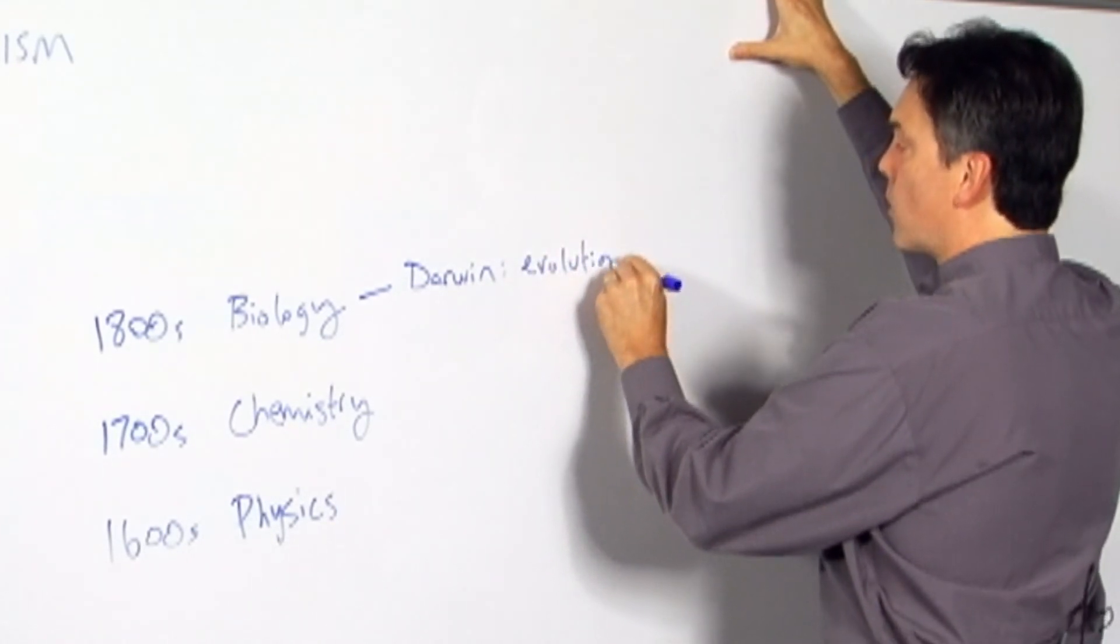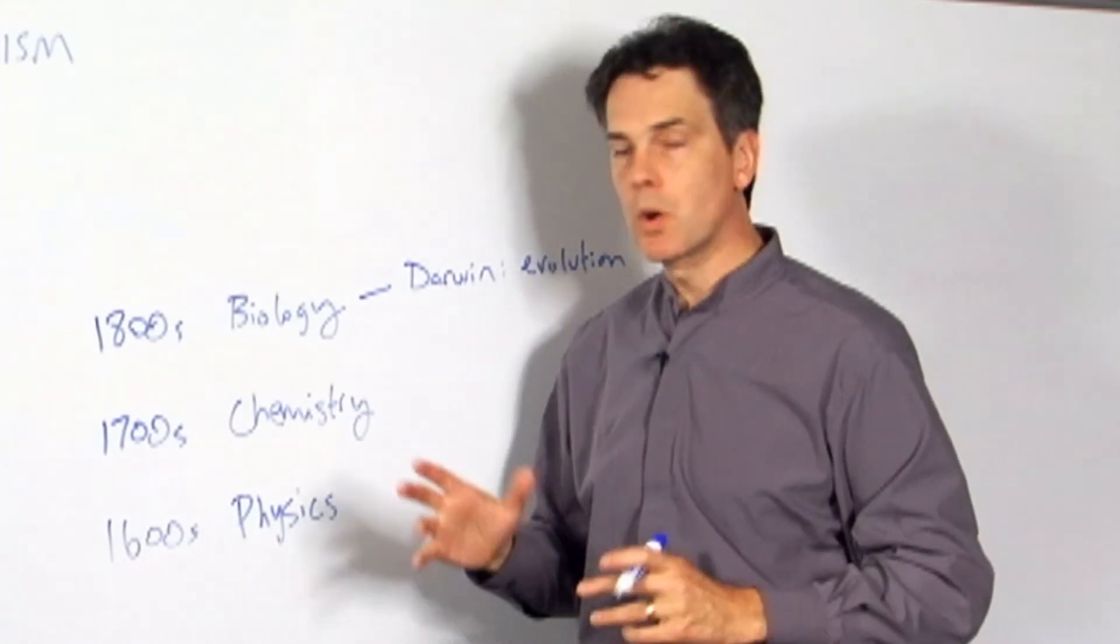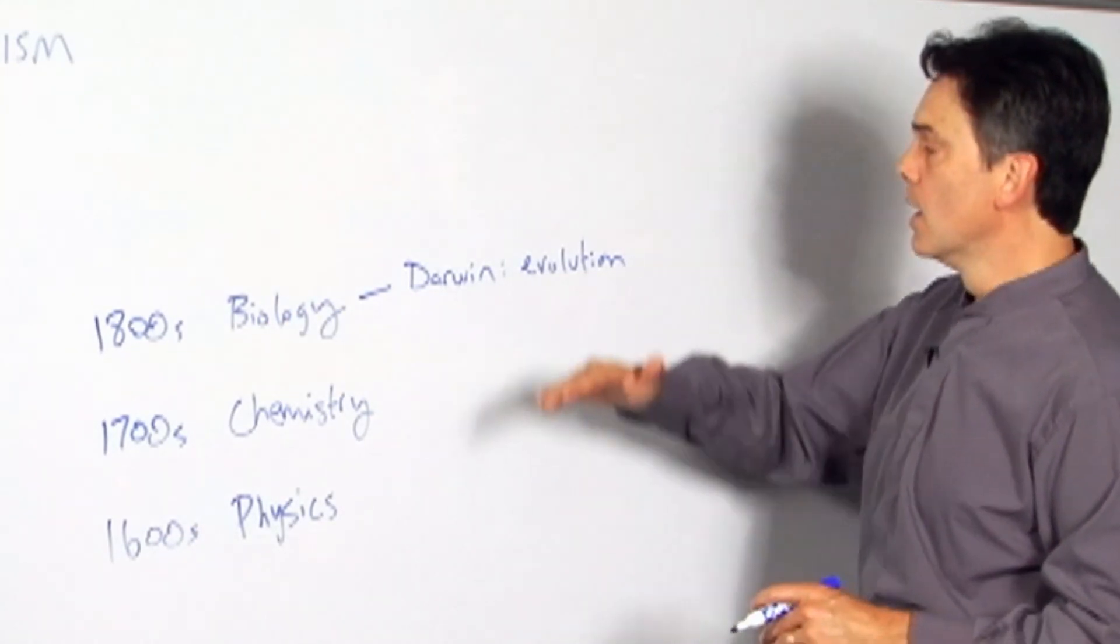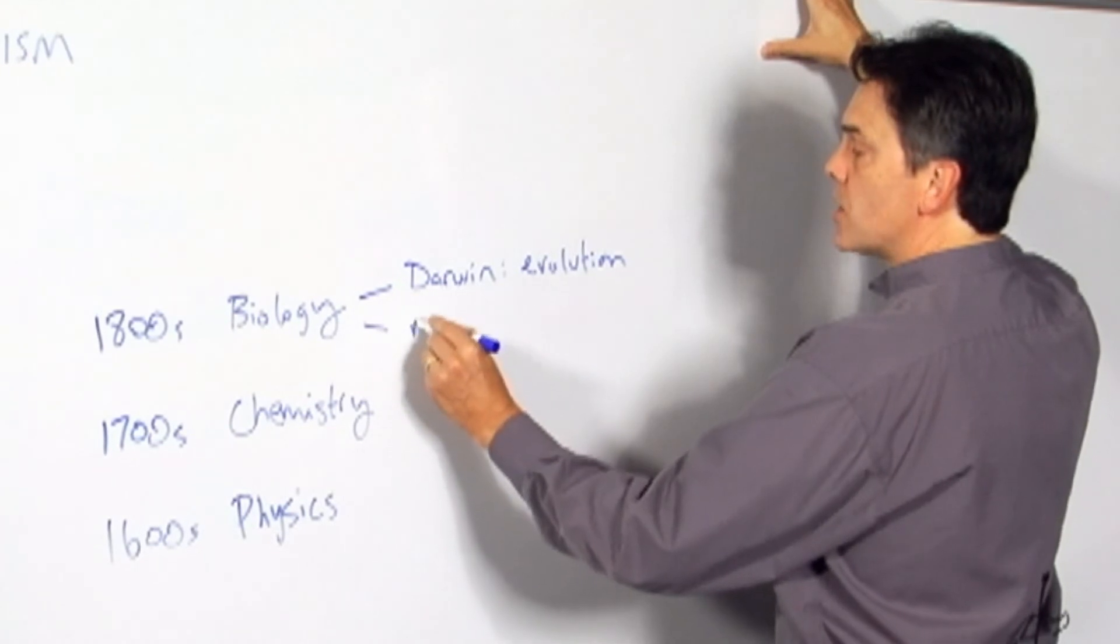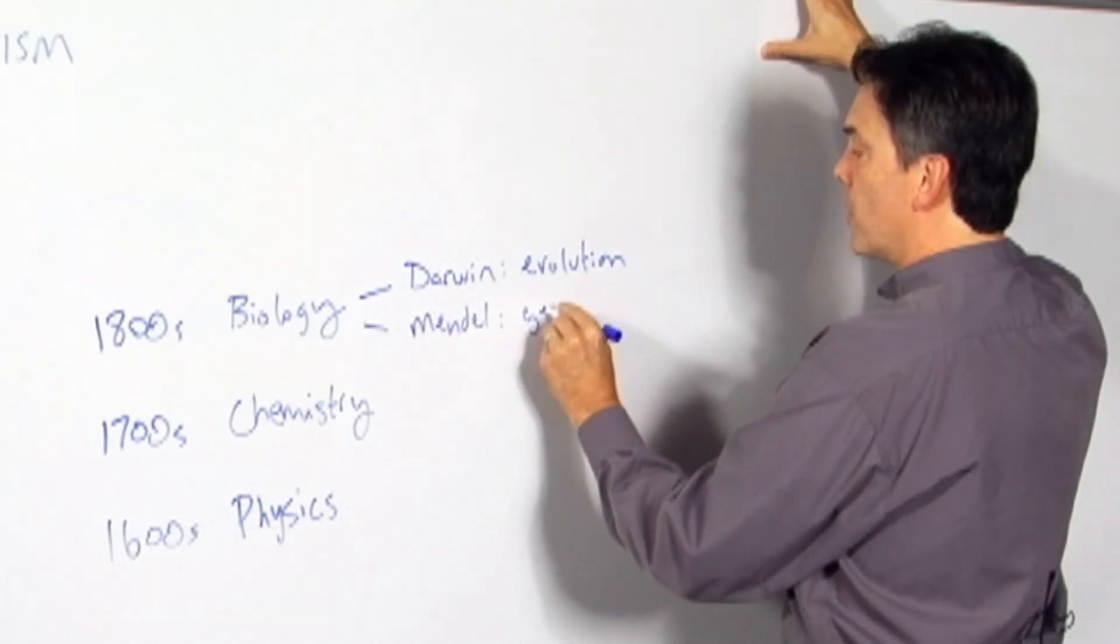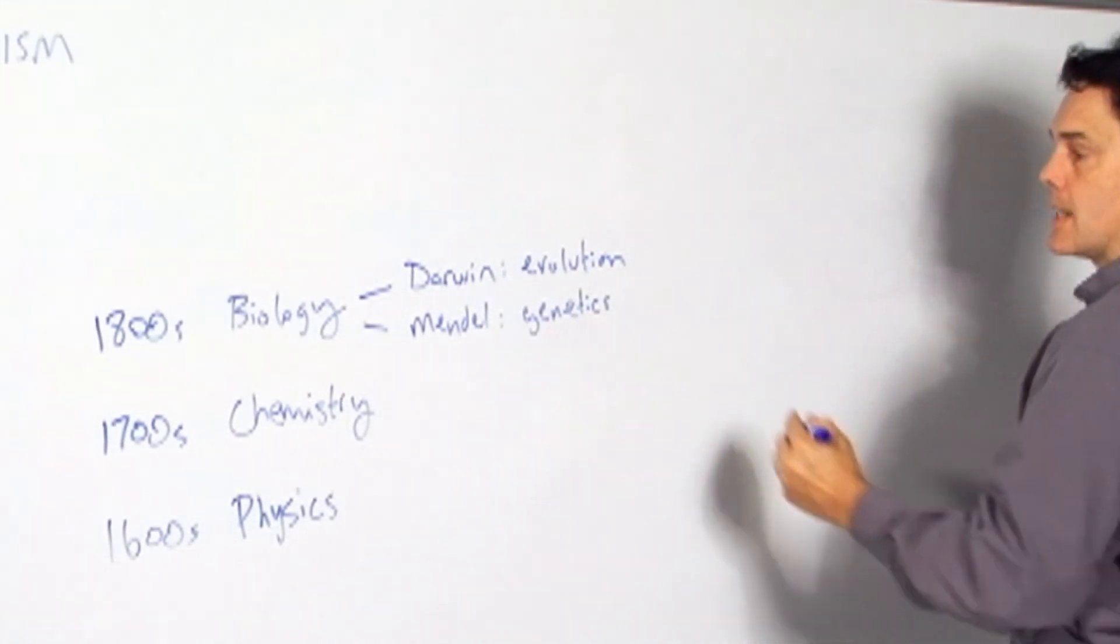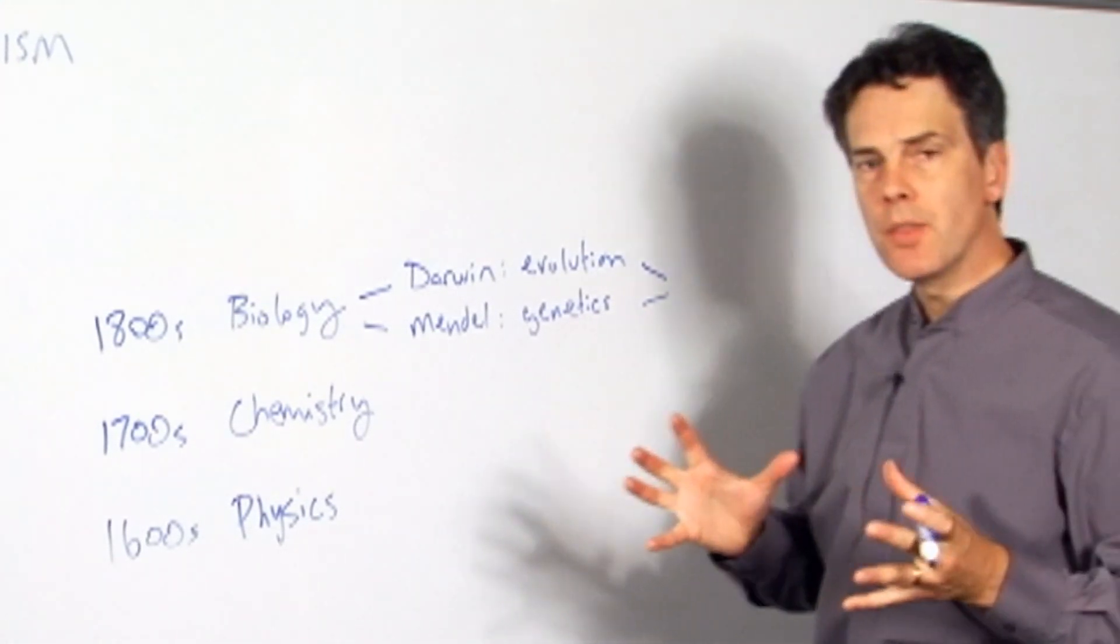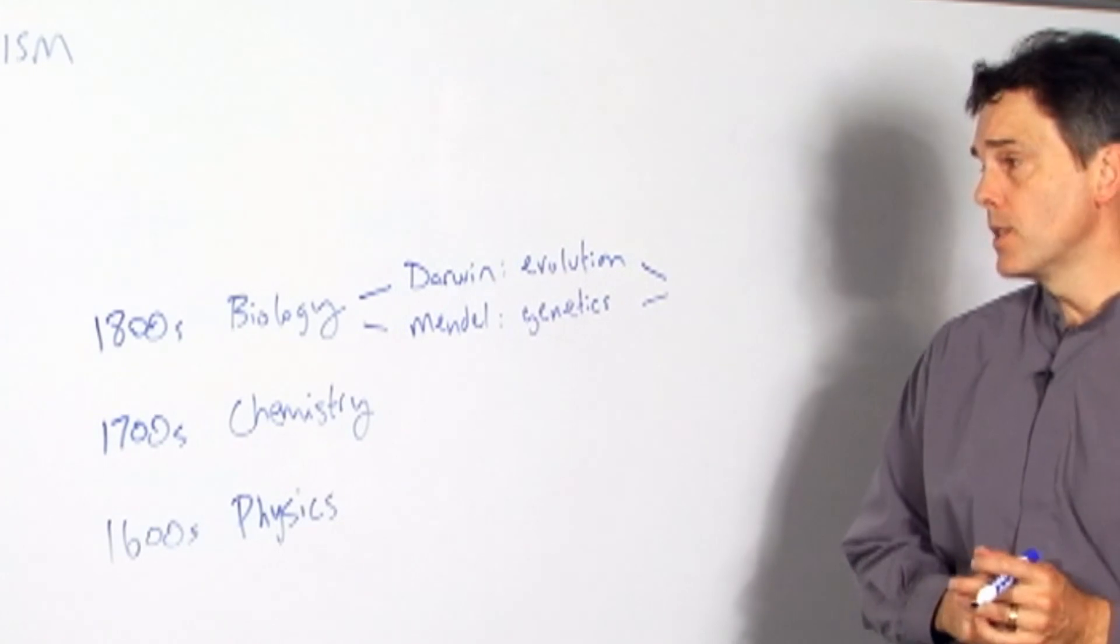Many thinkers have been developing the taxonomical schemes that biologists use, working out all of the kingdoms, genuses, and species in the 1700s and 1800s, but Darwin puts it all together. Then in the next generation, Mendel, unknown to Darwin, works out the basics of genetics. By the end of the 1800s, if you put evolution and genetics together, you've got the modern synthesis that biology operates within.